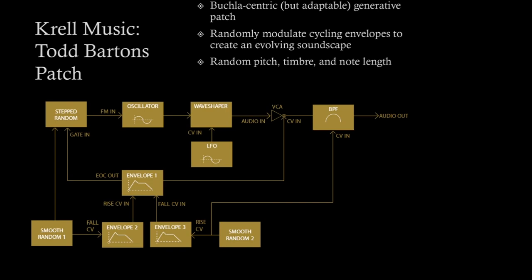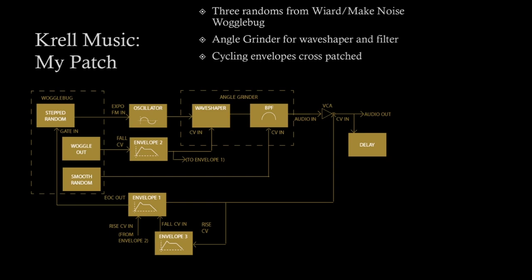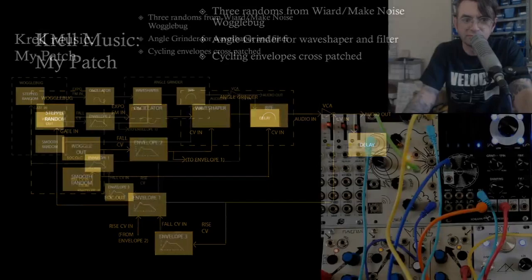Here's a diagram of Todd Barton's patch. It involves two smooth random generators, a stepped random generator, three envelopes, an oscillator, a wave shaper, an LFO, a VCA, and a bandpass filter. Having so many randoms and so many envelopes is perhaps peculiar to his particular Buchla. But the real meat of the patch — what makes it so generative and cool — involves the interaction of the three envelopes and the three random sources, and that it creates both random pitch, timbre, and note length. Here's a diagram of my patch: I'm subbing out the Buchla randoms for a Wogglebug, using the Angle Grinder for a wave shaper bandpass filter, and using Maths and a Function for all of my envelopes.